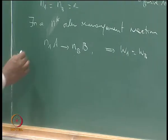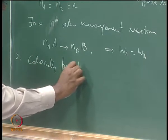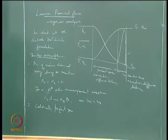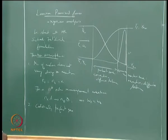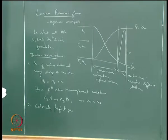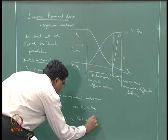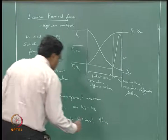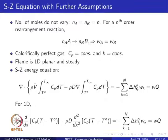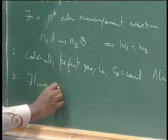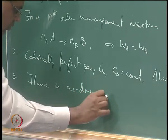Second, we assume a calorically perfect gas. In the Schwab-Zeldovich formulation we could deal with a temperature-varying specific heat, but here we make a calorically perfect gas assumption: Cp equals constant. Essentially we are also saying all thermal properties are constant, so the thermal conductivity K is also constant.